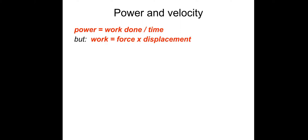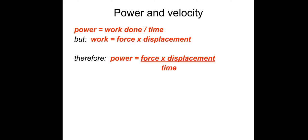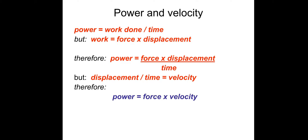Power and velocity: power equals work done over time, and work is force times displacement. Combining these gives power equals force times displacement over time. Since displacement over time equals velocity, we get the equation: power equals force times velocity, P = FV. You will need this equation.